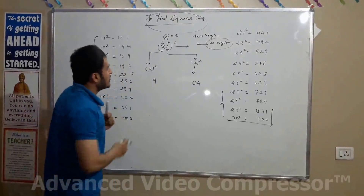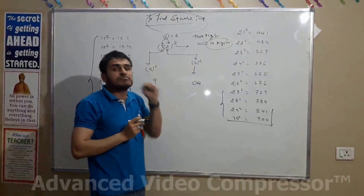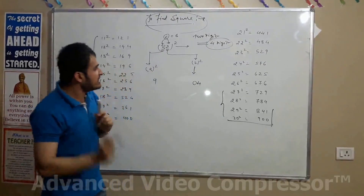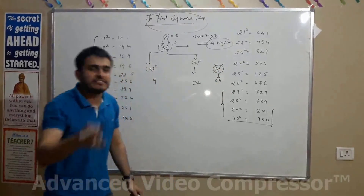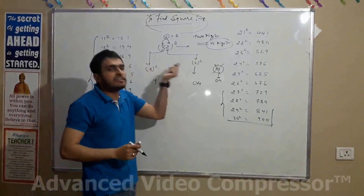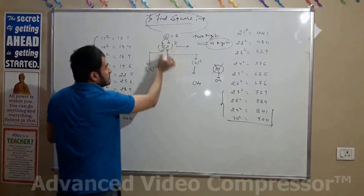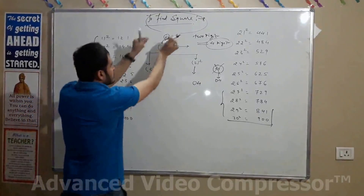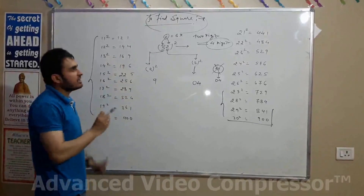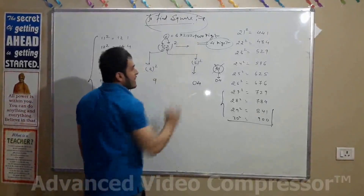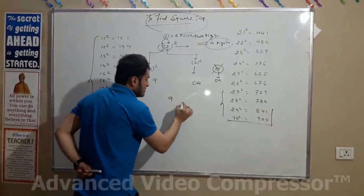To recap: square the unit number — if it is a single digit, write 04. If it is a two-digit number, handle the carry. Second step: multiply both digits, 3 × 2 = 6. Now double the multiplication: 6 × 2 = 12. So now we have 9, 12, and 04.